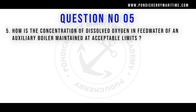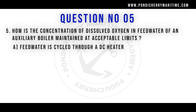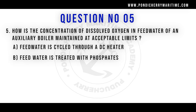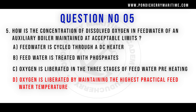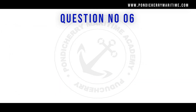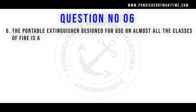Question five: How is the concentration of dissolved oxygen in the feed water of an auxiliary boiler maintained within acceptable limits? Option A: Feed water is cycled through a deaerator heater. Option B: Feed water is treated with chemicals. Option C: Oxygen is liberated in the three stages of feed water preheating. Option D: Oxygen is liberated by maintaining the highest practical feed water temperature. The correct answer is Option D.